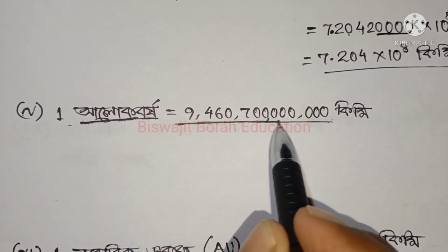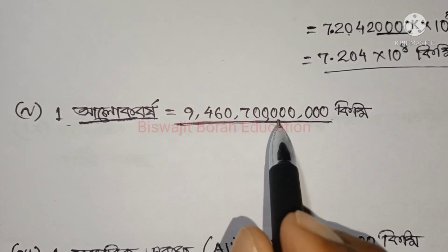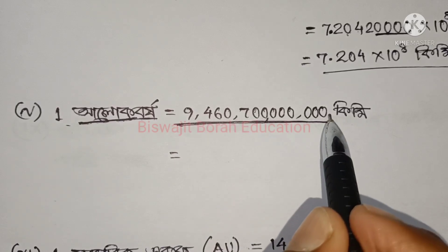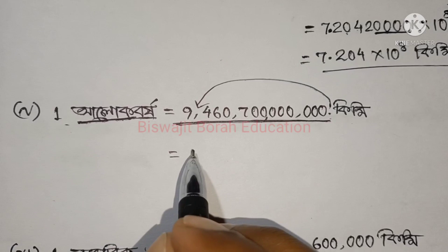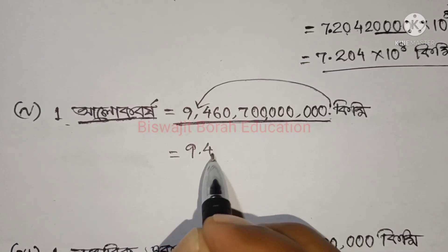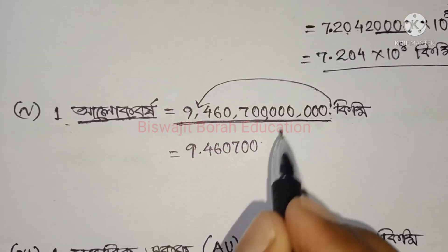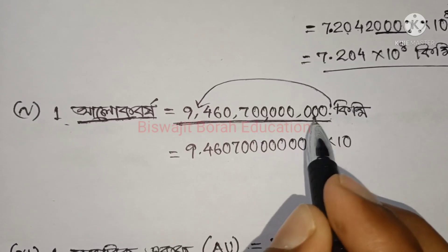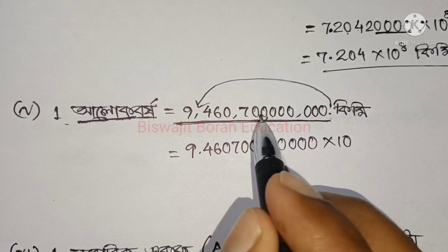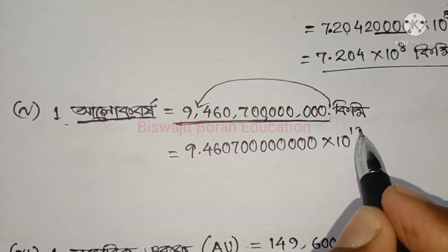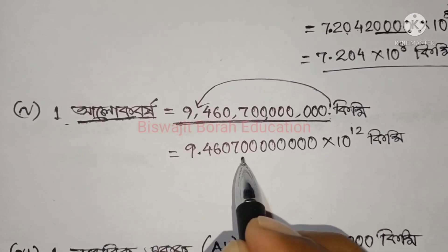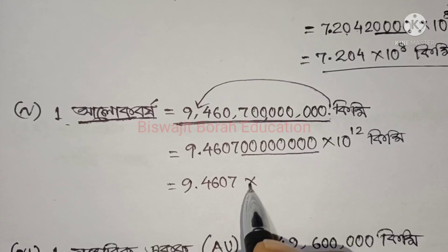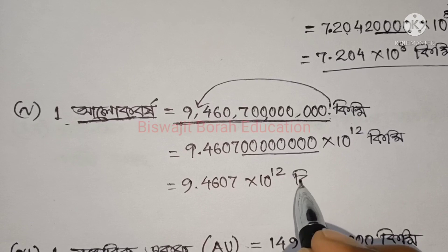This is the first step. If we take the step, we will take it step by step. So this step is the step — 9 point, the step: 9.460700000 — and then we take out the zeros and again raise 10 to the power pm.